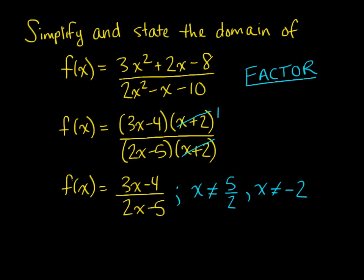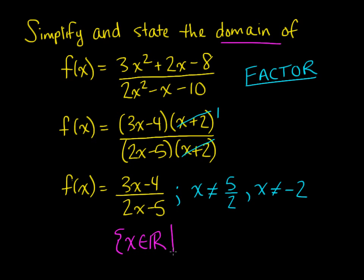We also want to state the domain. The domain of this function includes any x value except for these two restricted values. So x cannot equal five over two and x cannot equal negative two. In set notation, that would be: x is an element of all real numbers, such that x does not equal negative two and x does not equal five over two.